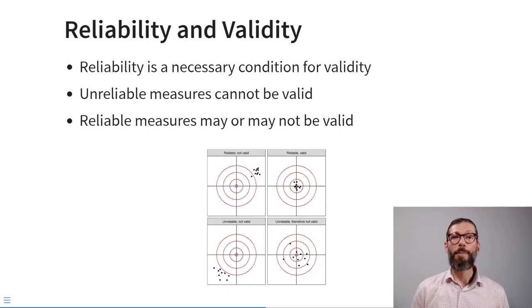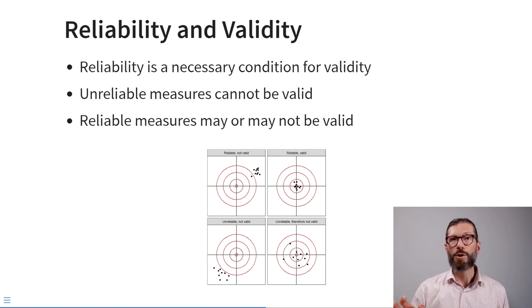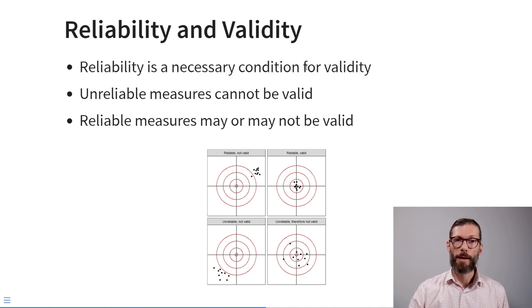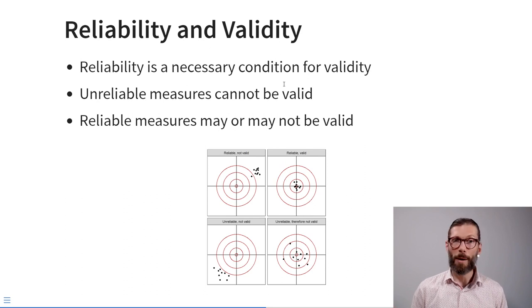Now that you understand how scale scores represent latent constructs based on observed indicators, let's talk about reliability and validity — two properties of the measurement of a latent construct. Reliability means we are able to measure the same thing consistently, and validity means we measure the thing we intended to measure. Note that reliability is a necessary condition for validity, but not a sufficient one.